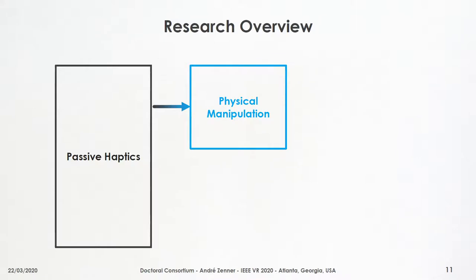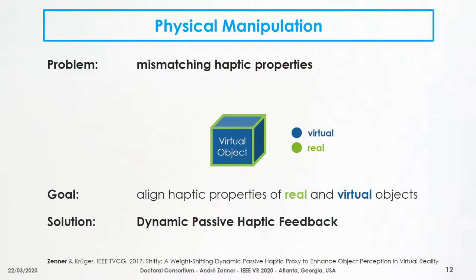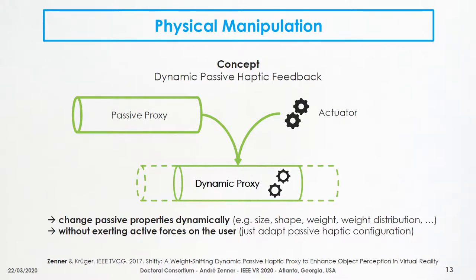Next, I'd like to introduce the first main research area that actually tries to overcome the drawbacks of passive haptic feedback: the idea of physical manipulation. In this research area, I'm looking at the problem of mismatching haptic properties and how we can solve it by aligning the haptic properties of real and virtual objects. We proposed a technique called dynamic passive haptic feedback. The idea is to combine passive props and simple actuation to build dynamic props that use actuators not to actively exert forces on the user, but instead to reconfigure the props so that their passive haptic feedback properties change — for example, changing their size, shape, weight, or weight distribution — in order to represent a large variety of different virtual objects realistically.